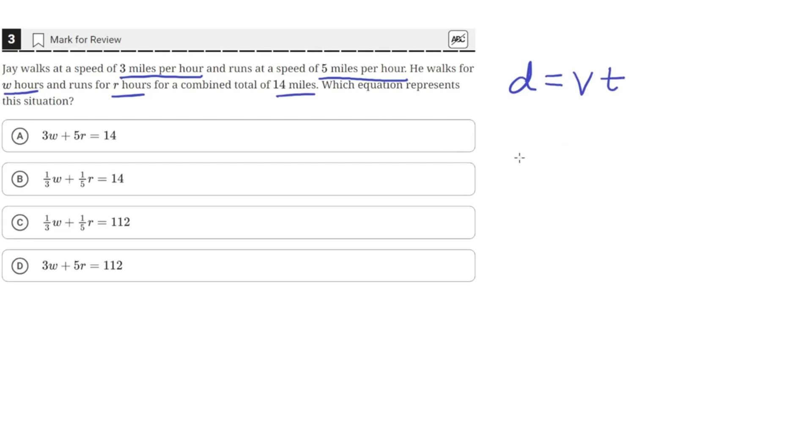J walks at a speed of 3 miles per hour for W hours. So this will give us the distance that he walked, and then he runs at a speed of 5 miles per hour for a total of R hours. This will give us the distance that he ran.